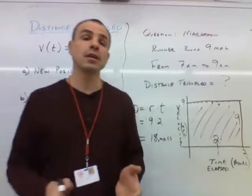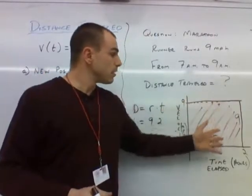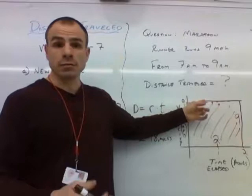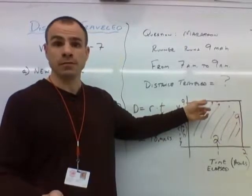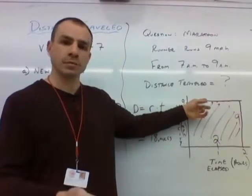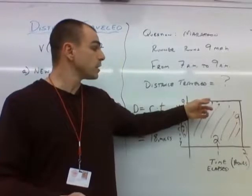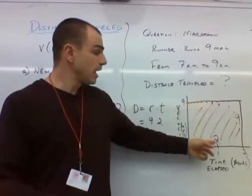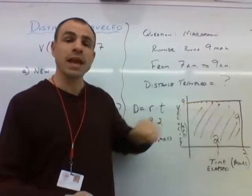So what we see here is that the region that's between our function, in this case our velocity function, our derivative, okay? Because remember, velocity is the derivative of position. So the region between the derivative and the x-axis, if we find the area of that region, then that answer is this total distance traveled idea.